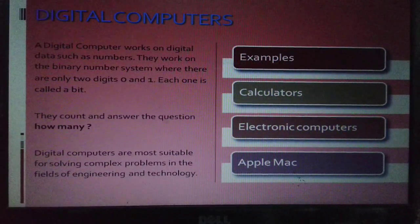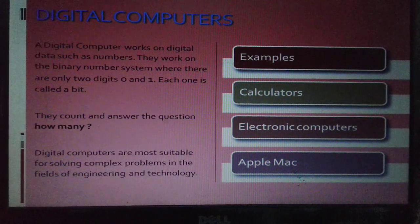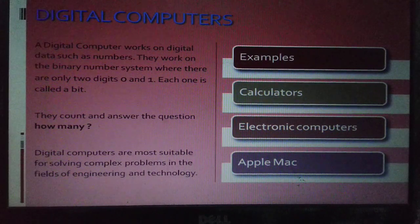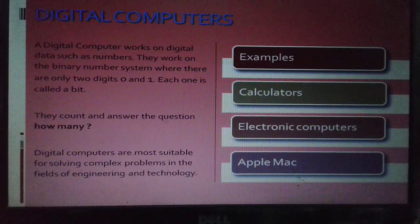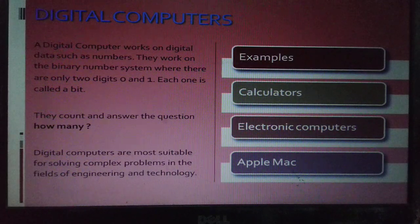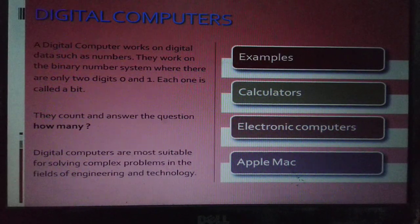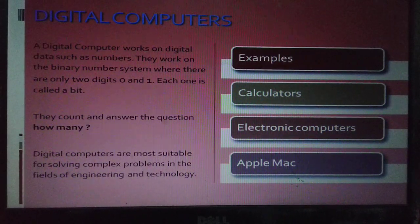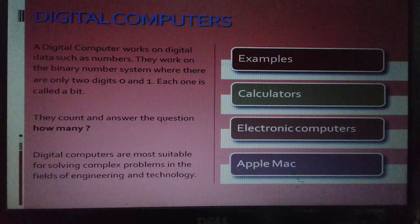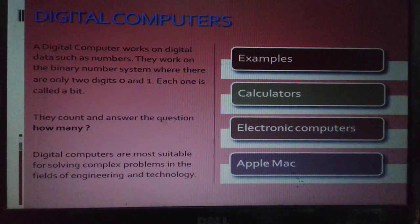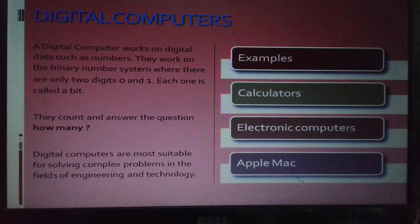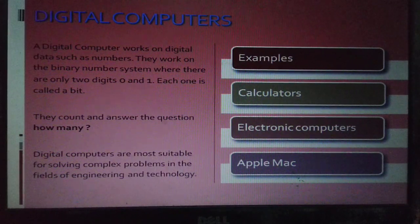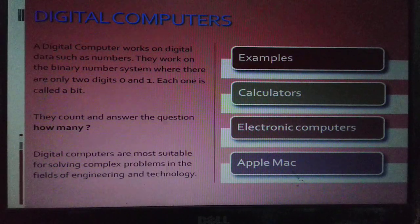Next, Digital Computers. A digital computer works on digital data such as numbers. They work on the binary number system where there are only two digits, zero and one. Each one, that is a zero or a one, is called a bit. These digital computers are suitable for solving complex problems in the fields of engineering and technology.